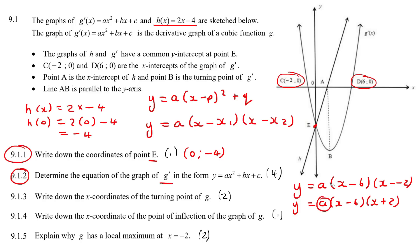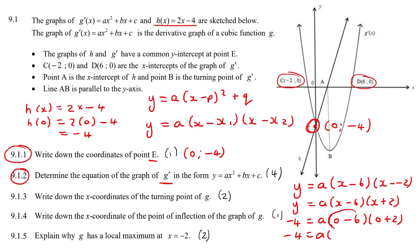To find a, we need another point. We can use point e, which is (0, −4). Substituting: −4 = a(0 − 6)(0 + 2), so −4 = a(−12). Dividing both sides by −12 gives a = 1/3. Some learners say a is 3, but that's doing it the wrong way around.